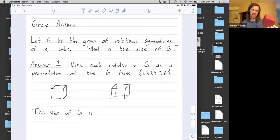So while I'm going through this, you can make your own guess. How many rotational symmetries of the cube do you think there are? So let G be the group of rotational symmetries of this cube. What's its size?